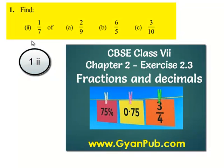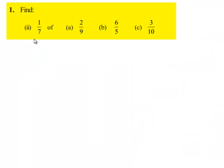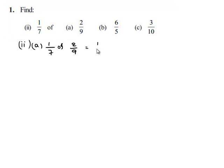Moving on to the second part of the first question: find 1/7 of the given fractions. First, 1/7 of 2/9 is nothing but 1/7 multiplied by 2/9, which equals 1 multiplied by 2 upon 7 multiplied by 9. That gives 2 upon 63.